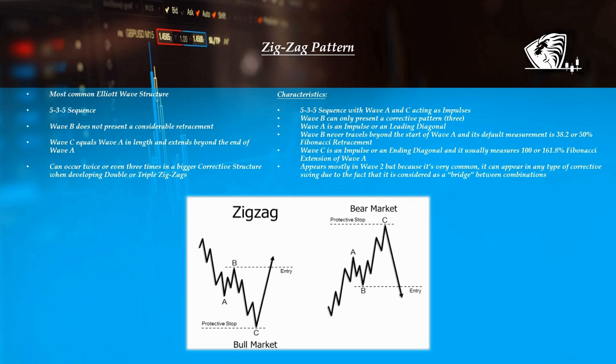Wave B can only present a corrective pattern. Wave A is an impulse or a leading diagonal. Wave B never travels beyond the start of wave A, and its default measurements are either 38.2 or 50% Fibonacci retracement of wave A. Wave C is an impulse or an ending diagonal, and it usually measures 100 or 161.8% Fibonacci extensions of wave A and wave B. The zigzag appears mostly in wave 2, but because it's very common, it can appear in any type of corrective swing, as it is considered a bridge between combinations.